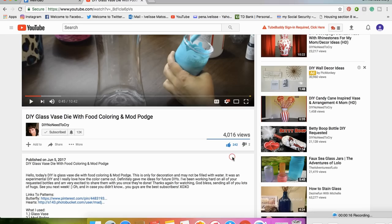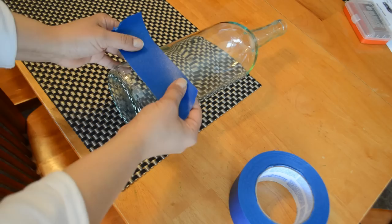First, place some painter's tape over the spot on the bottle that you'll be drilling the hole. Mark the spot where you want to drill the hole. This hole is for the lamp cord to go through.